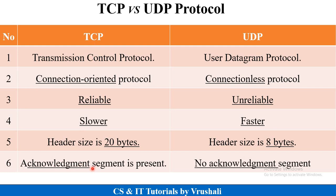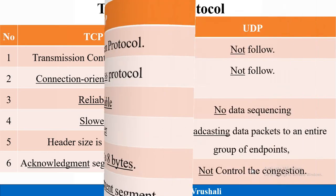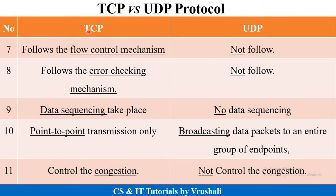In TCP, an acknowledgement segment is present because the receiver sends an acknowledgement to the sender confirming whether they received a particular message or not. In UDP, there is no acknowledgement segment. TCP follows a flow control mechanism, meaning too many packets cannot be sent to the receiver at the same time, but UDP does not follow any flow control mechanism.